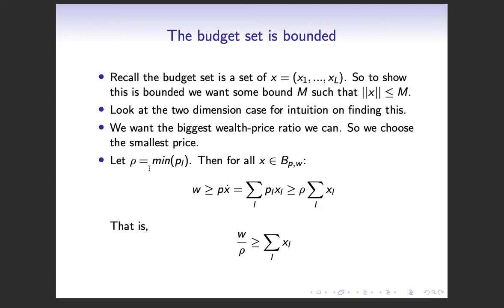So we let rho equal the minimum price, and we know this is going to be positive because it's a condition that the prices are strictly positive. So then for all X in our budget set, this inequality holds, and then all we're doing is just rewriting what this means. And then because rho is the minimum, you know that this is going to be greater than or equal to rho times X sub L. And because it's a constant, we just pull it outside.